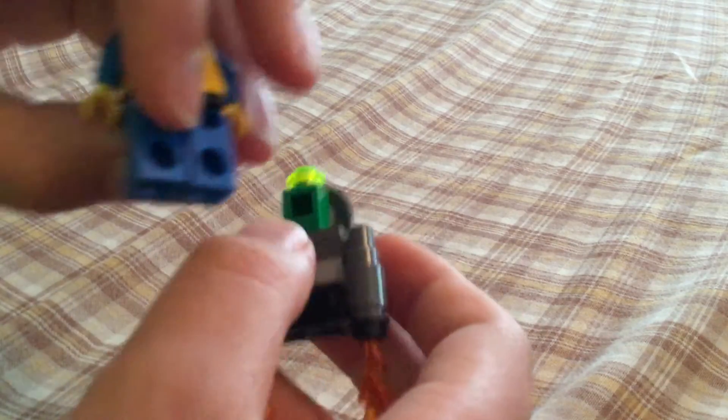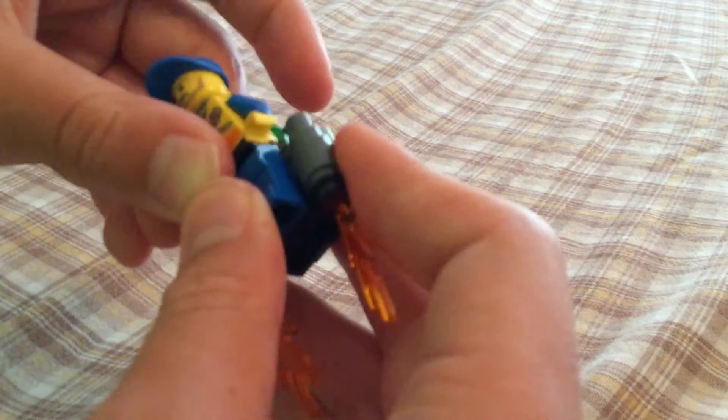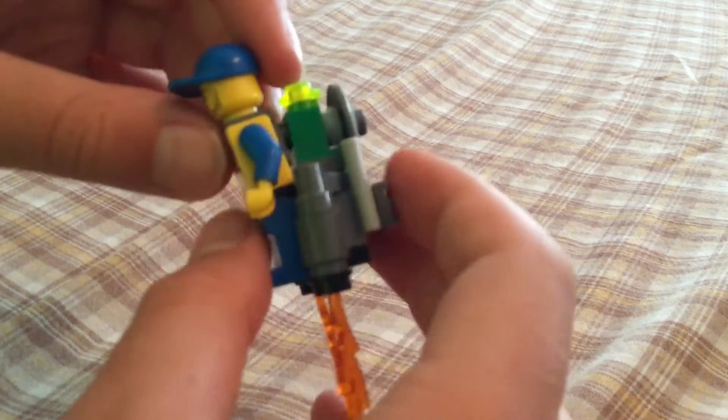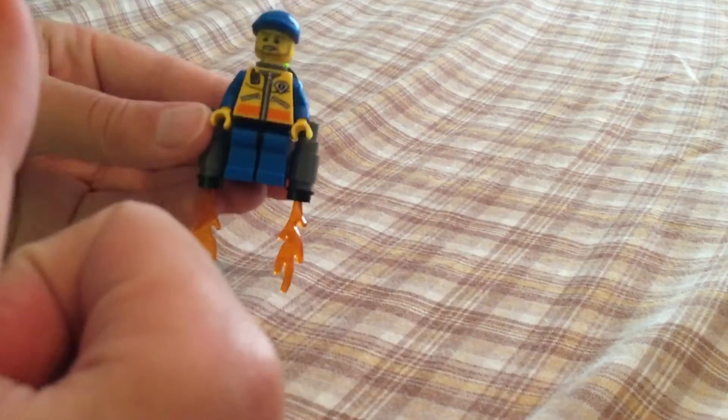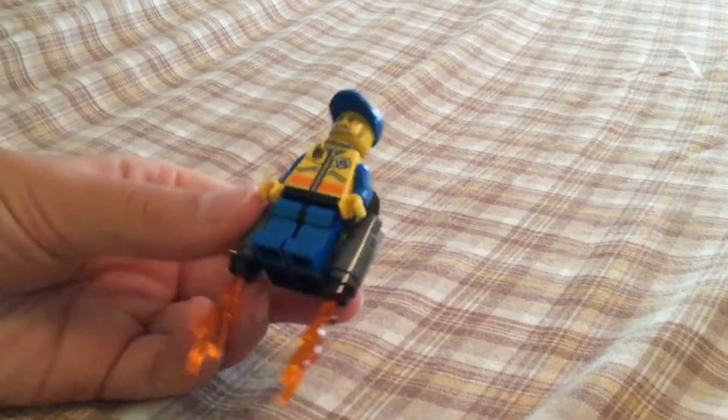You're going to put it on those 2 studs like that, and you can put it on like that. Then this piece in the back will go into there like that, so you might need to fiddle with it until you get it on. Here is your simple LEGO jetpack! Don't forget to like, comment, and subscribe. Goodbye for now!